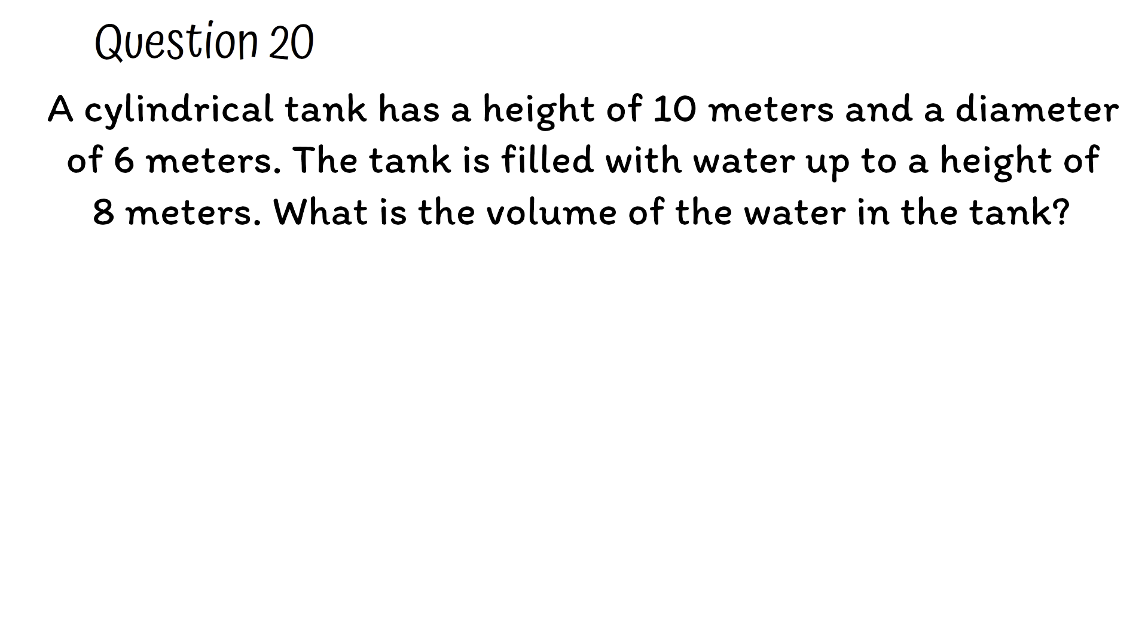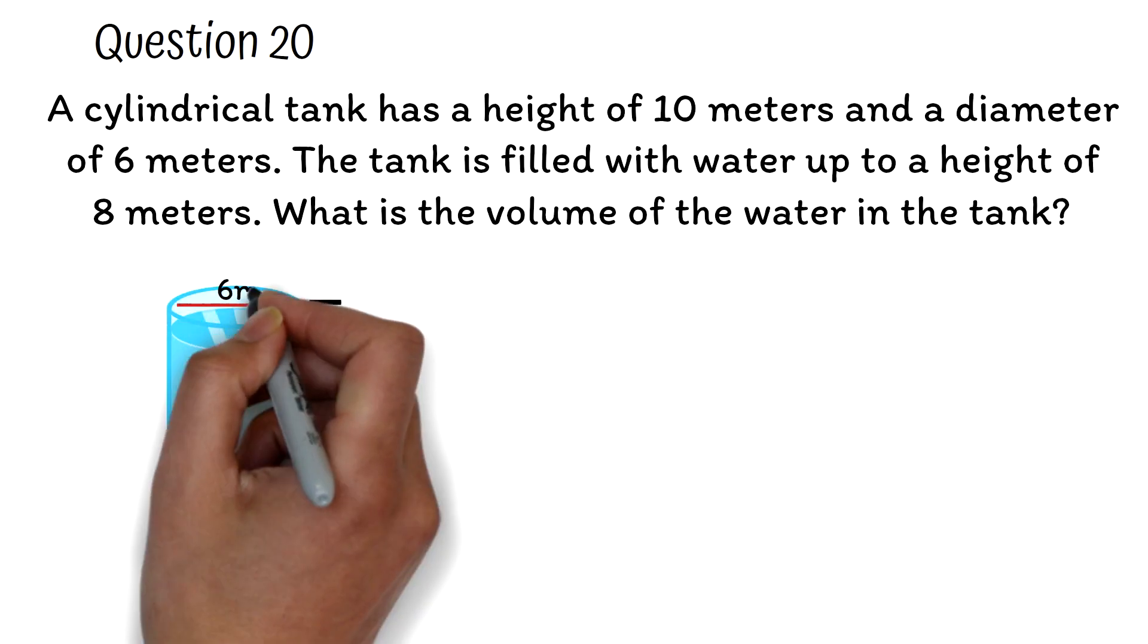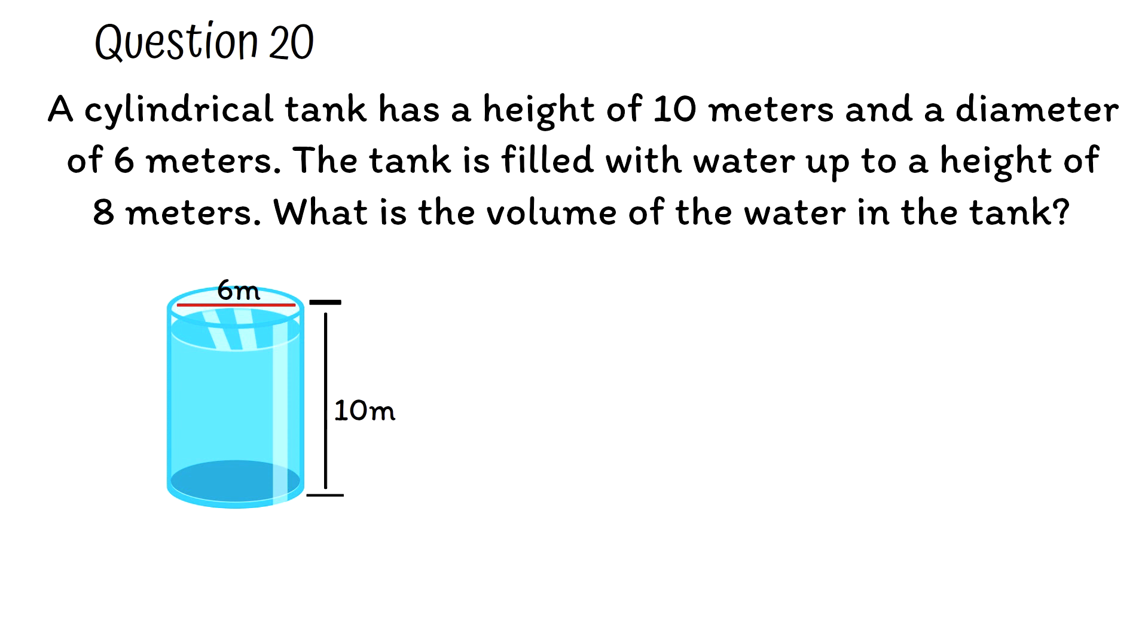Question 20. A cylindrical tank has a height of 10 meters and a diameter of 6 meters. The tank is filled with water up to a height of 8 meters. What is the volume of the water in the tank? Let's have a pictorial representation of the information given. Take this as our cylinder. The height given is 10 meters and the diameter is 6 meters. The water is only filled to 8 meters of the height of the cylindrical tank.